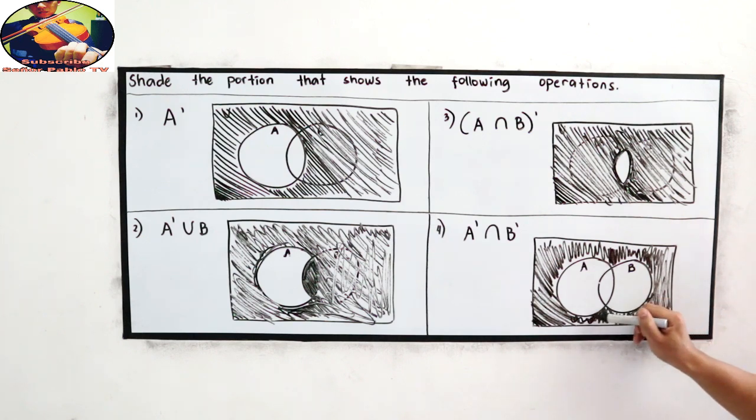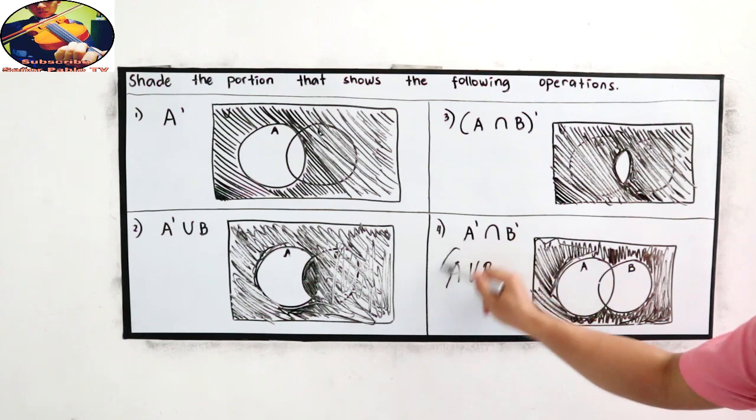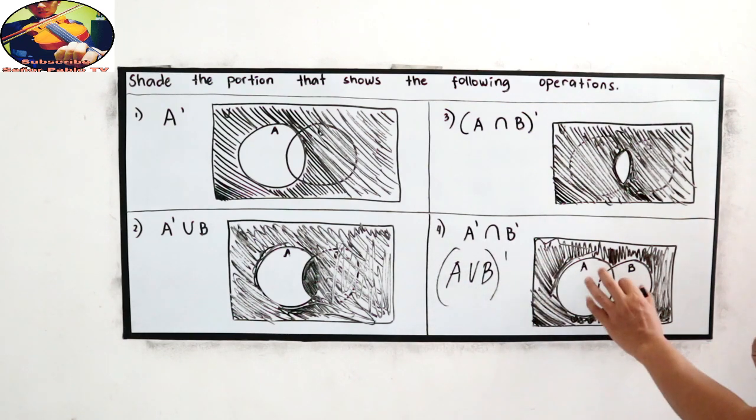Do not include A and B. So this is our final answer. This is also the same as A union B then complement. A union B then its complement. They are equal.